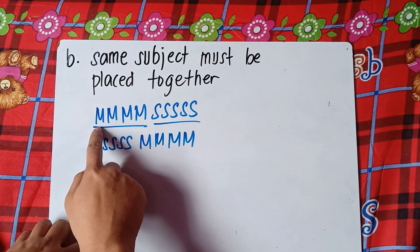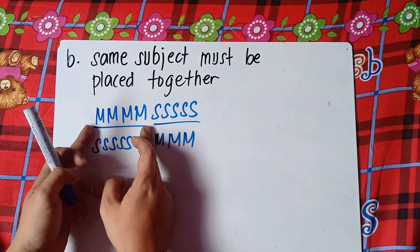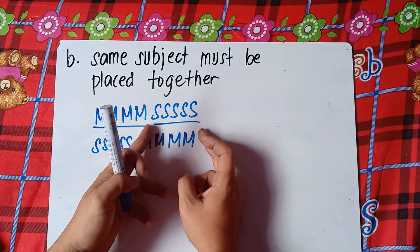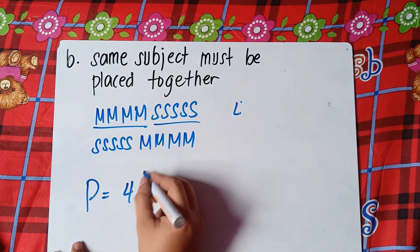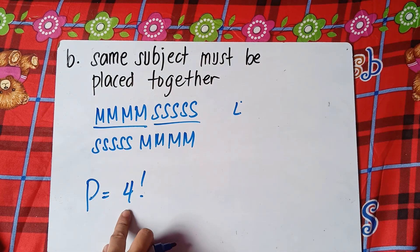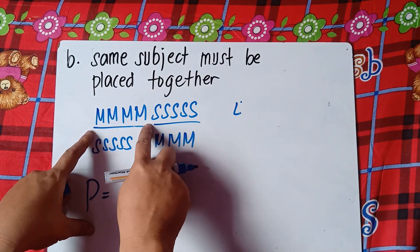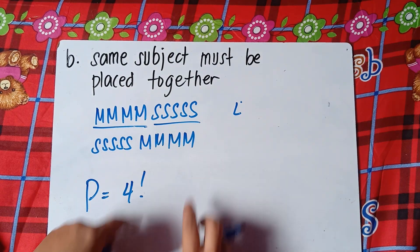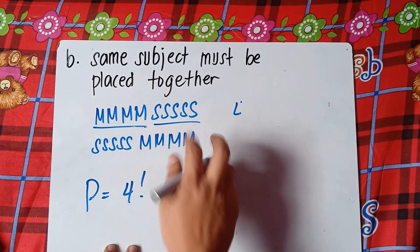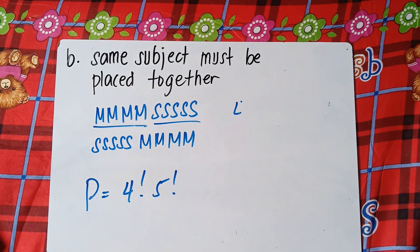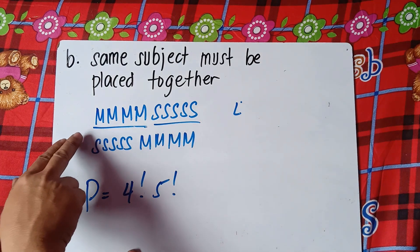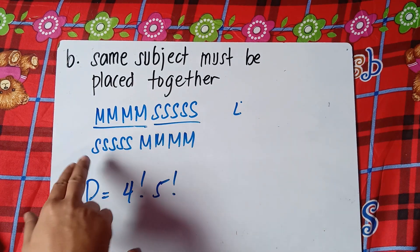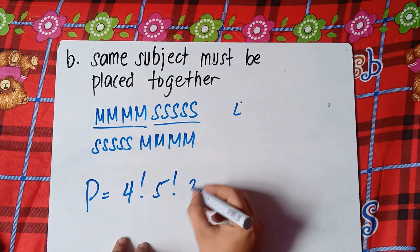Count the number of mathematics books: one, two, three, four — four places to arrange math. And five places to arrange the science books. So we have four factorial for the math books and five factorial for the science books. We can also arrange which group comes first: mathematics before science, or science before math — that gives us two ways, multiplied by two.